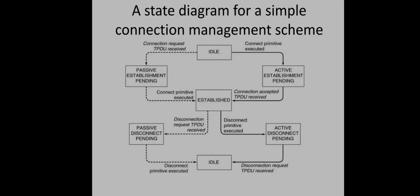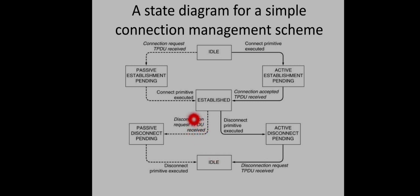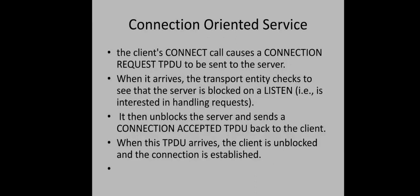When the client requests disconnection, the disconnect primitive is executed, sending a disconnect request to the server, and the state moves to active disconnect pending. After receiving a reply from the server — the disconnection request TPDU — the state moves to idle. On the server side, upon receiving the disconnect request, the state changes to passive disconnect pending, and once the server acknowledges the request, it also moves to idle. This completes the state diagram for connection management.